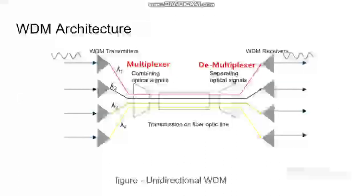WDM architectures. WDM systems are generally of two types: unidirectional and bidirectional. In unidirectional, at one side we can use transmitters and at the other side we can use receivers.